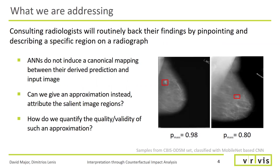Unfortunately, neural networks do not induce a canonical mapping between the derived prediction and the input image. Could we give an approximation instead — attribute the salient image regions contributing towards the classifier's decision? And if we can, how do we quantify the quality and validity of such an approximation?